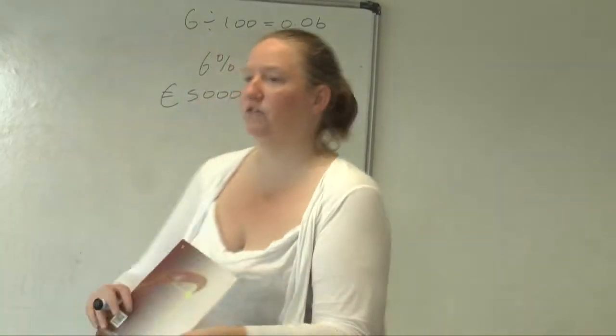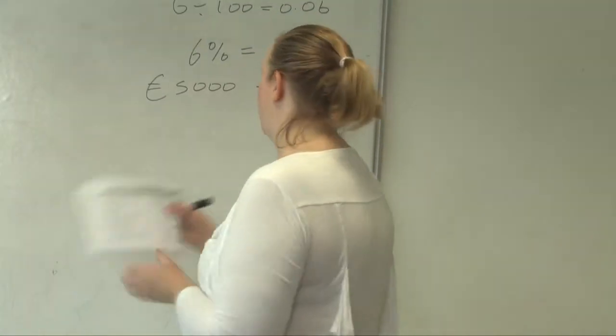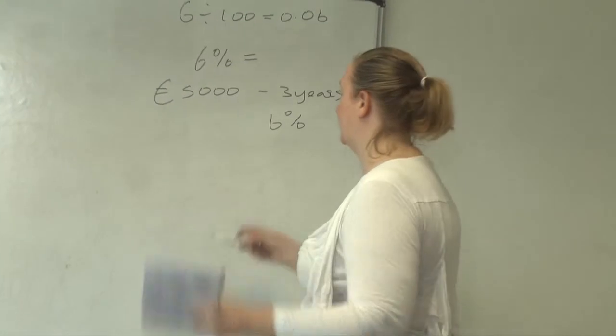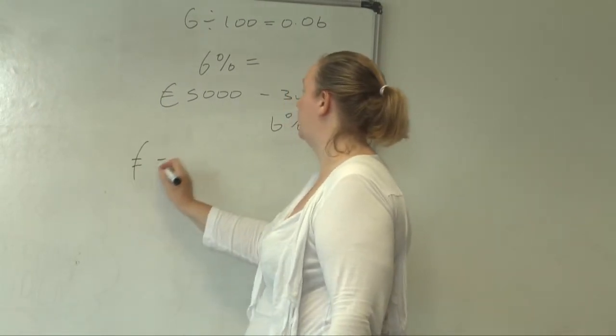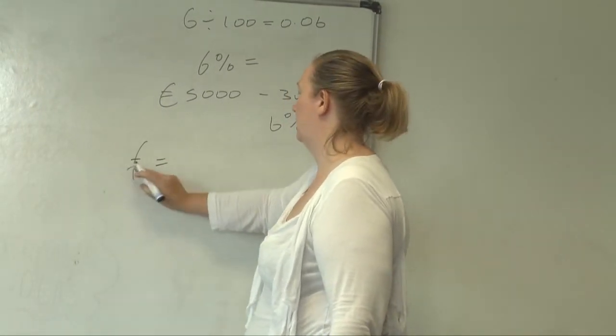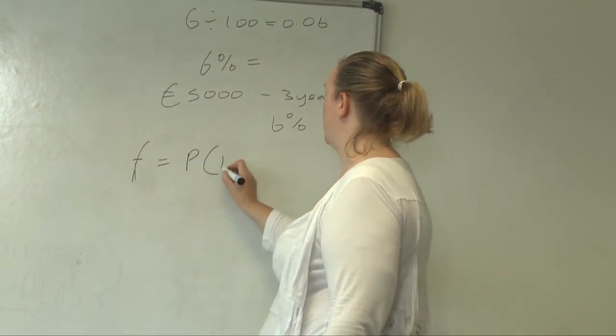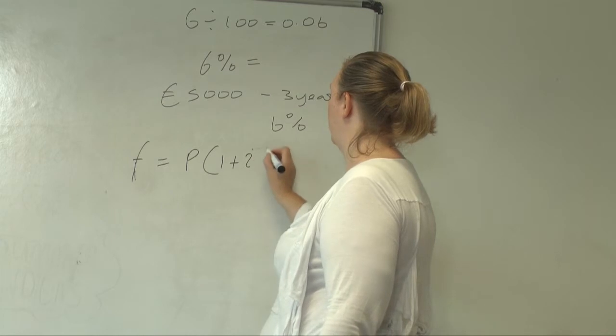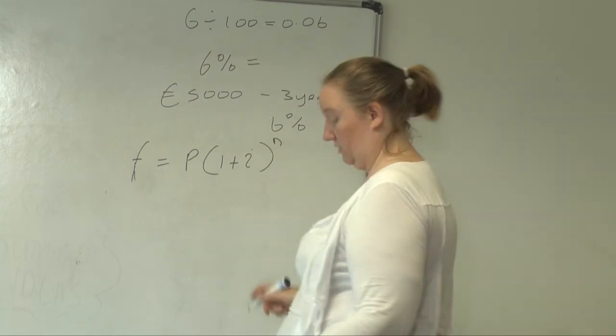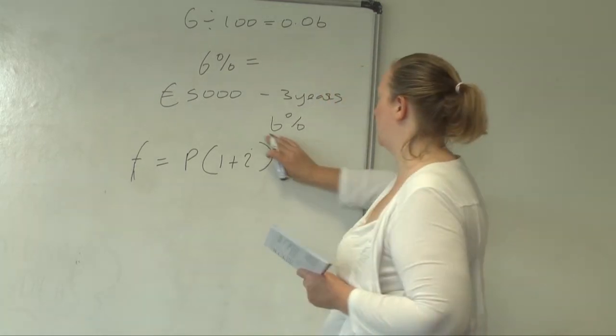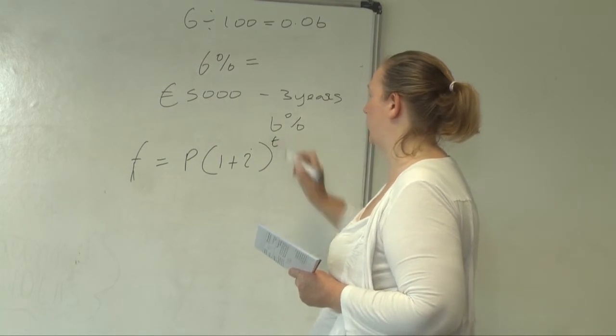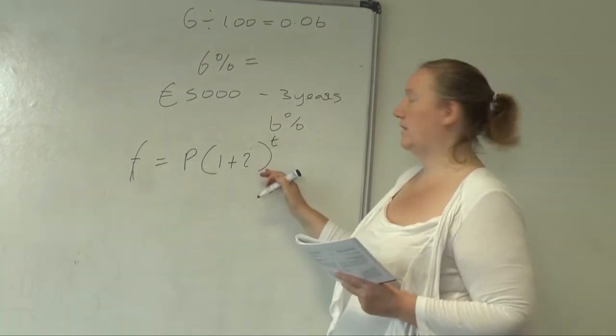So, you want this formula here. And it's really easy because you just use the formula. And the formula is F. That's what you're looking for. F equals P bracket 1 plus I to the power of N. Oh, T. Sorry. T in the new one.